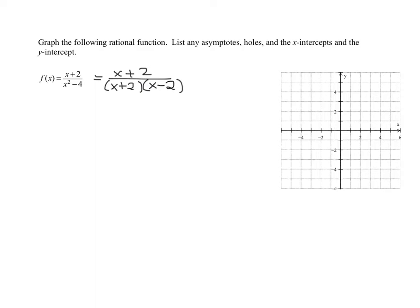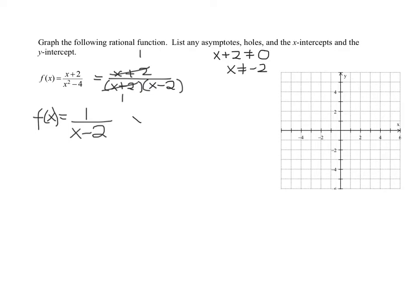Does anything reduce? I have a factor of x plus 2 in both the numerator and the denominator, so those are going to reduce. My function f(x) in reduced form can be written as 1 over x minus 2. But we need to add a restriction that x cannot equal negative 2, since x plus 2 can't equal 0 in the original function.